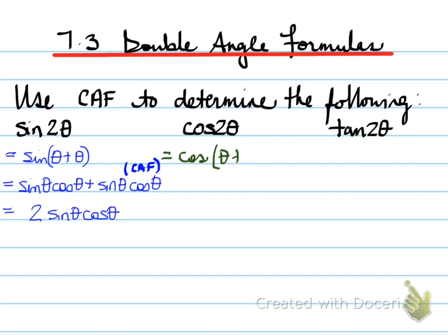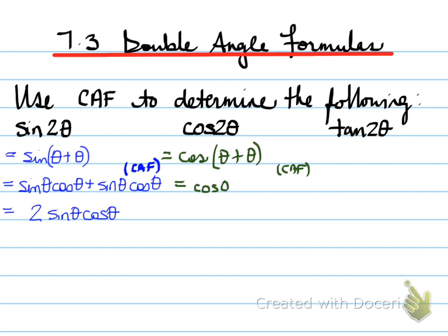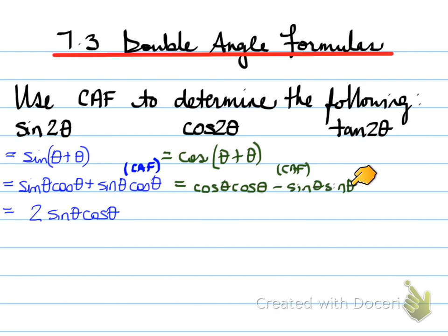Alright, cos 2θ is equal to cos of θ plus θ. Using the CALF rule, we get cos θ cos θ minus sine θ sine θ.